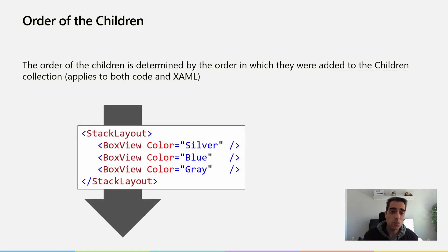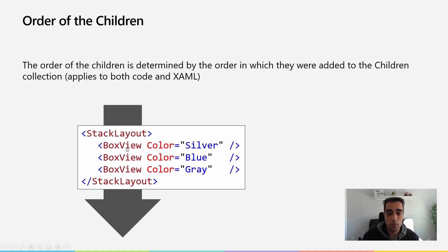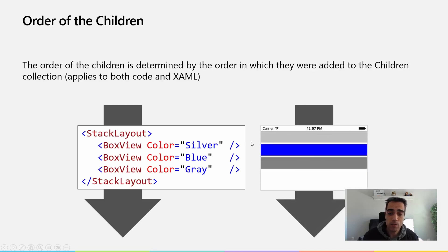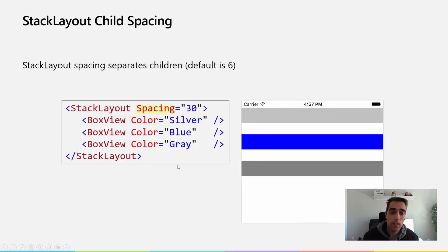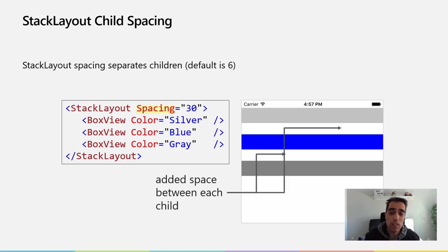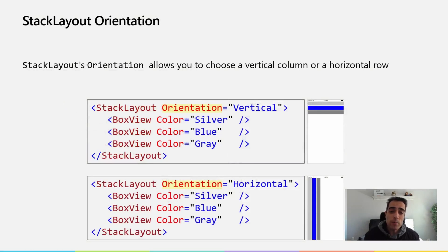The order in which the children appear is determined by the order in which they were added to the children collection. In this example we will see first the silver box view, then the blue box view, and last the green one — first, second, and third. The children can also have spacing — by default the spacing is six, but we can change this using the spacing property and set any value we want. This space is added between each child.